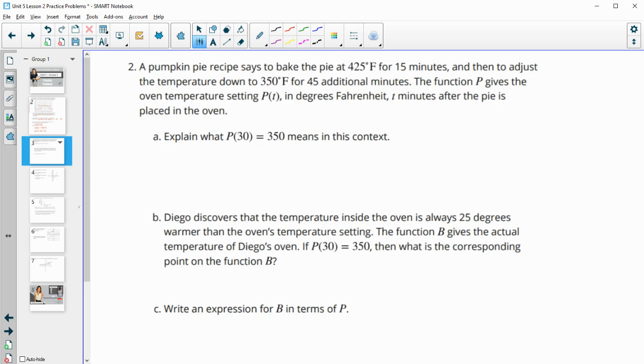Number two says a pumpkin pie recipe says to bake the pie at 425 degrees for 15 minutes, then to adjust the temperature down to 350 for an additional 45 minutes. If the function P gives the oven setting, so the temperature that the oven is set at in degrees, T minutes after the pie is placed in the oven, explain what P of 30 means in context.